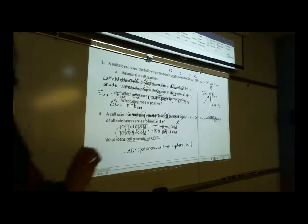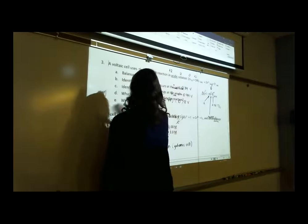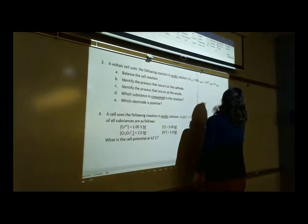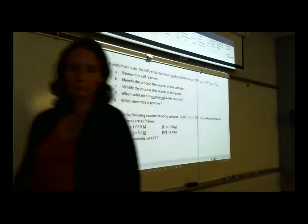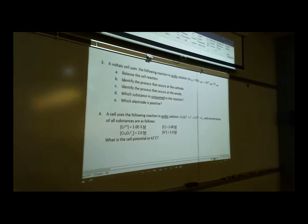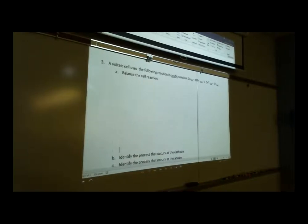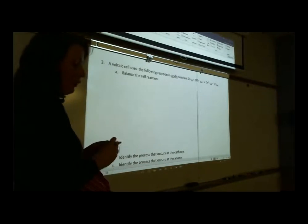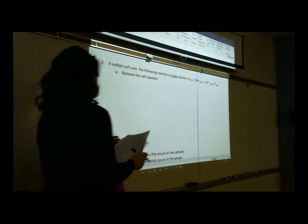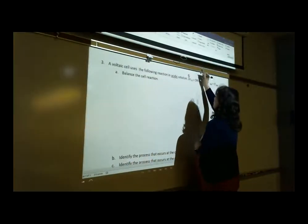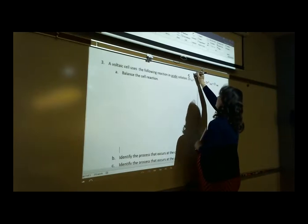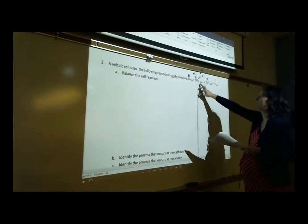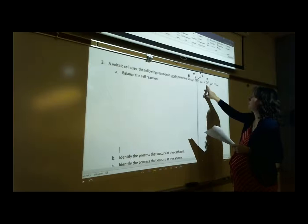Number 3 has multiple parts, so let's look at it. We've been balancing redox reactions for a while now, so hopefully this is no longer challenging. Let's go through and assign oxidation numbers. Zn is 0, O is minus 2, Cl in ClO3− is plus 5, Zn2+ is plus 2, Cl− is minus 1. Oxygen is not participating in the redox, so we're doing 0 to plus 2 for Zn and plus 5 to minus 1 for Cl.